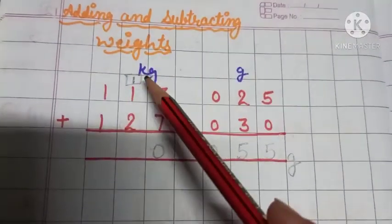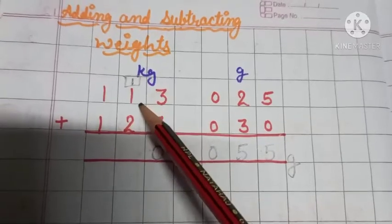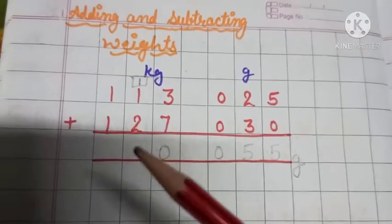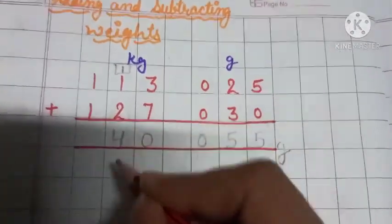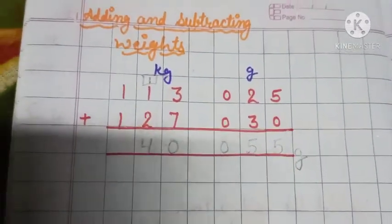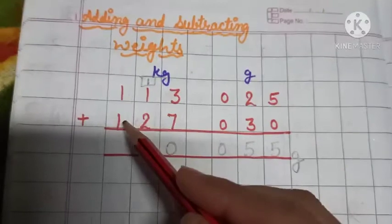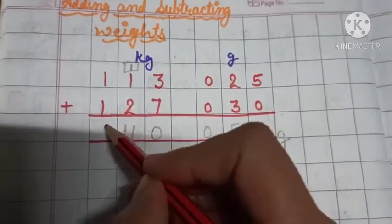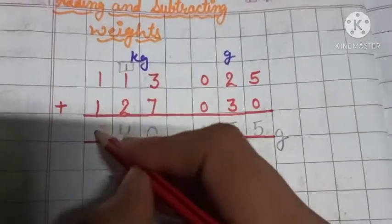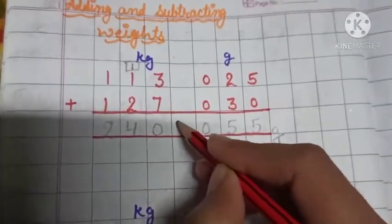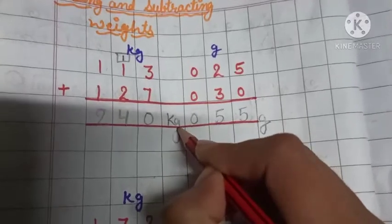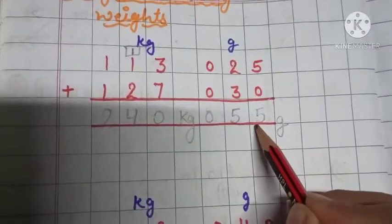Now, we have to add these. 1 plus 1 plus 2. We get 4 here. Very good. Now, 1 plus 1 is equal to? Good. 1 plus 1 is 2. So 240 kg and 55 gram.